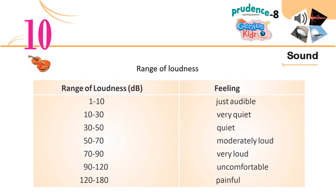Range of Loudness table — Decibels and Feeling: 1–10 dB: just audible; 10–30 dB: very quiet; 30–50 dB: quiet; 50–70 dB: moderately loud; 70–90 dB: very loud; 90–120 dB: uncomfortable; 120–180 dB: painful.